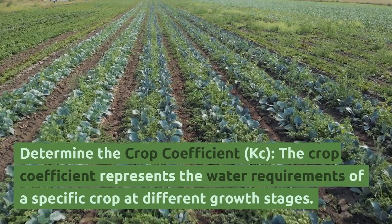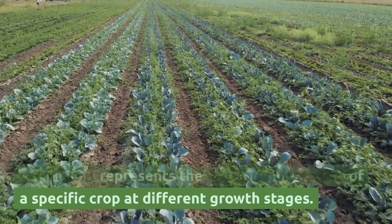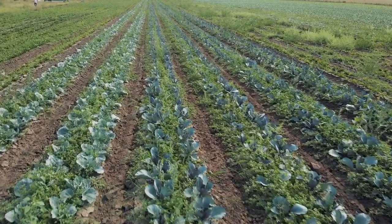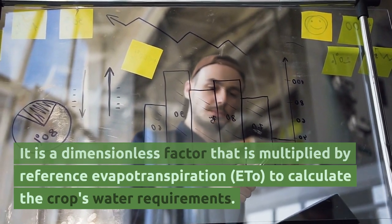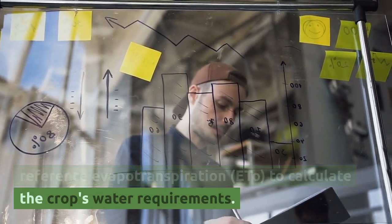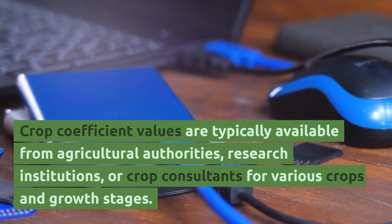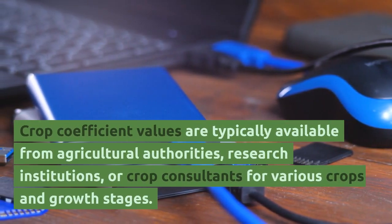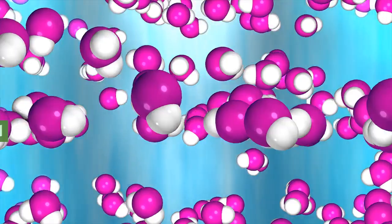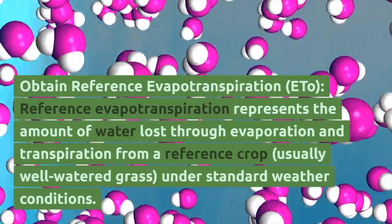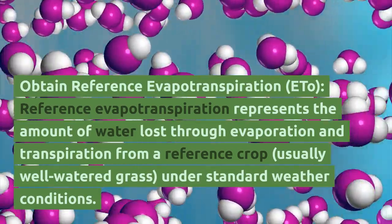Determine the crop coefficient. The crop coefficient represents the water requirements of a specific crop at different growth stages. It is a dimensionless factor that is multiplied by reference evapotranspiration to calculate the crop's water requirements. Crop coefficient values are typically available from agricultural authorities, research institutions, or crop consultants for various crops and growth stages.